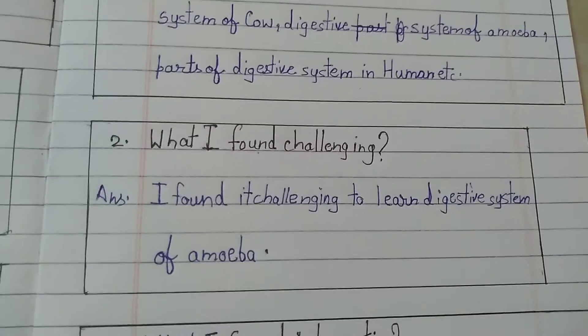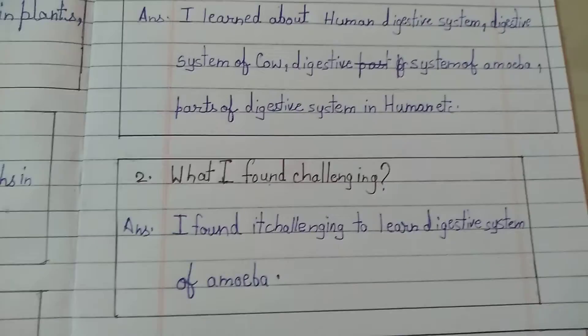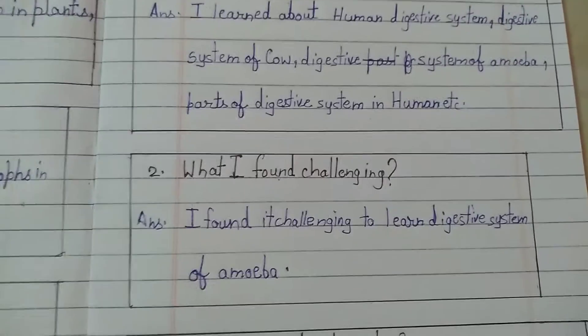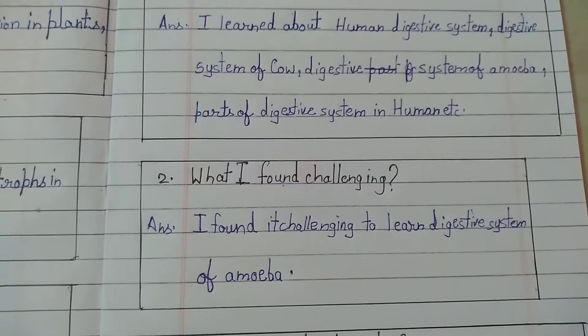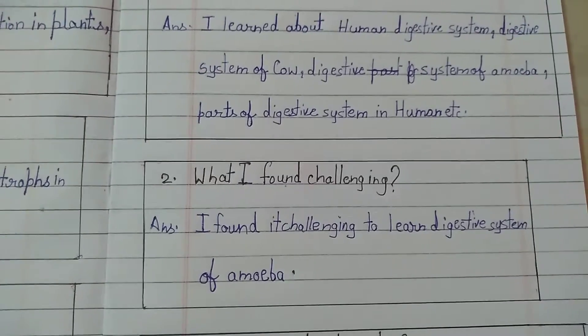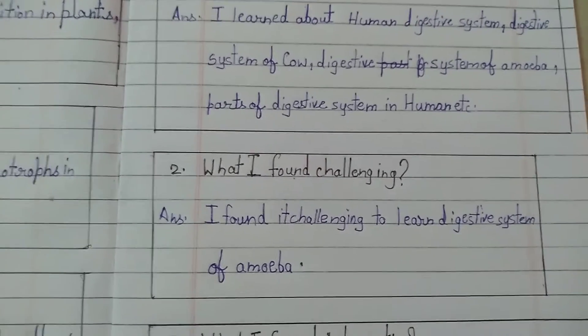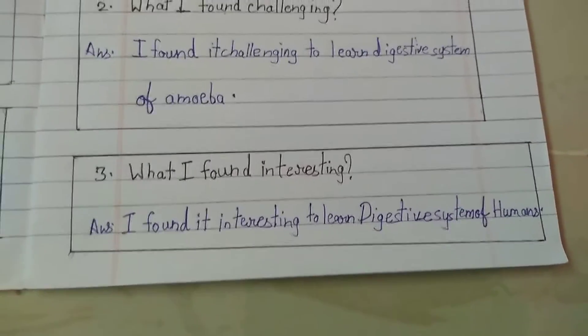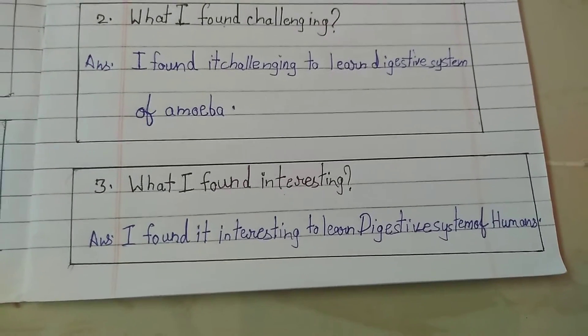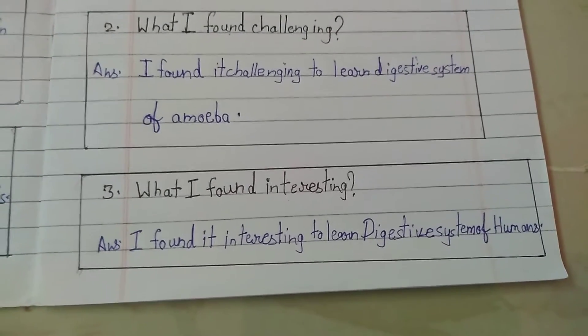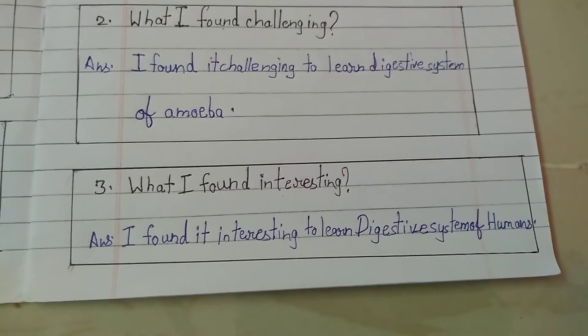Second is what I found challenging: I found it challenging to learn the digestive system of amoeba. Third is what I found interesting: I found it interesting to learn the digestive system of humans.